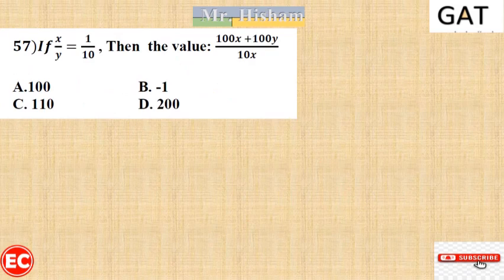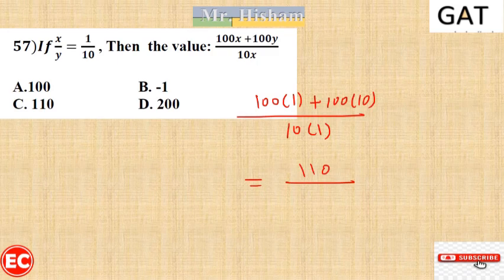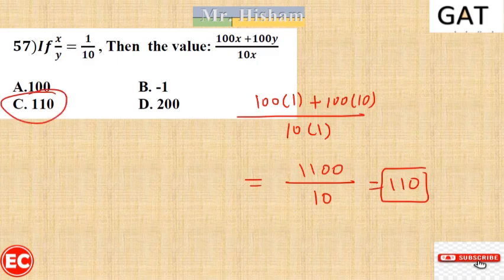Question 57: If x/y equals 1, find the value of (100x + 100y) over 10x. You can simplify or assume values. If x equals 1 and y equals 10 (since x/y... actually assuming x=1 and y=1 or plugging directly): replacing x with 1 and y with 10 gives (100 + 100×10)/10 = 1100/10 = 110. The right answer is C.